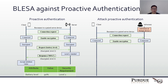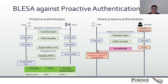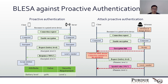Now let's see how BLISA can attack proactive authentication. The attacker still clones the MAC address and advertises as the server. The client establishes the connection and tries to enable encryption. In this case, the attacker can respond with an error message so that the encryption fails. In some implementations, even though the encryption fails, the connection is not aborted — instead, the connection continues in plain text, and the client can still send the request in plain text. Similar to the previous attack, the attacker can directly respond with a spoofed value, and the client receives and accepts the spoofed value.